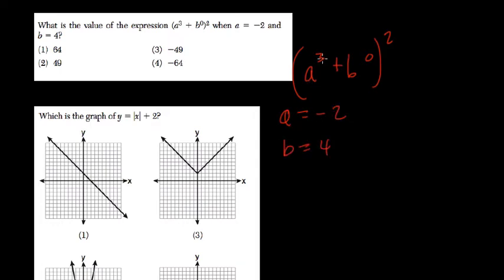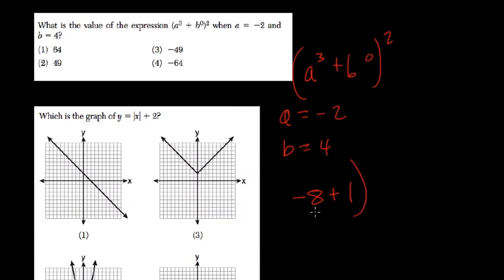Well, a to the third power — negative 2 to the third — is negative 2 times negative 2 times negative 2, which is negative 8. Plus b to the zero: anything to the zero power is 1, and then we square that.